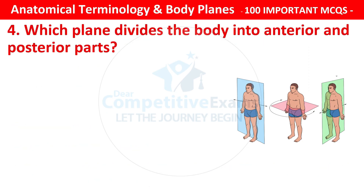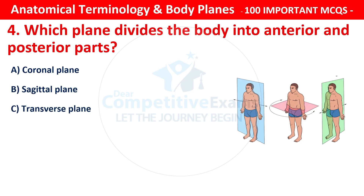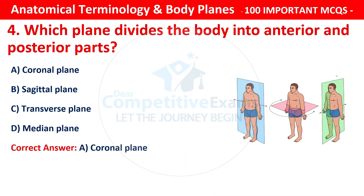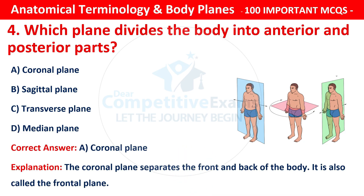Question number 4: Which plane divides the body into anterior and posterior parts? Options are: coronal plane, sagittal plane, transverse plane, or median plane. The correct answer is A — that is coronal plane. The coronal plane separates the front and back of the body. It is also called the frontal plane.